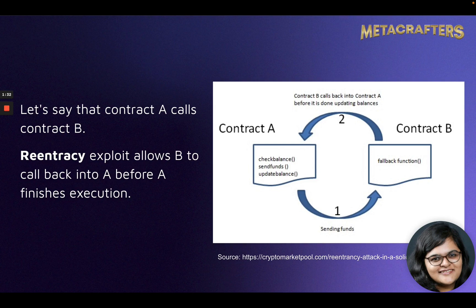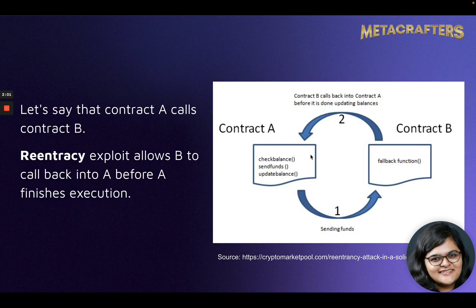As you can see in this diagram, you have contract A which is undergoing some processes like check balance, send funds, and then update the balance. During one of these steps, there is a cross-contract call that happens to contract B, which has a function that calls back into contract A before it updates the balance, and draws the funds from this particular contract.